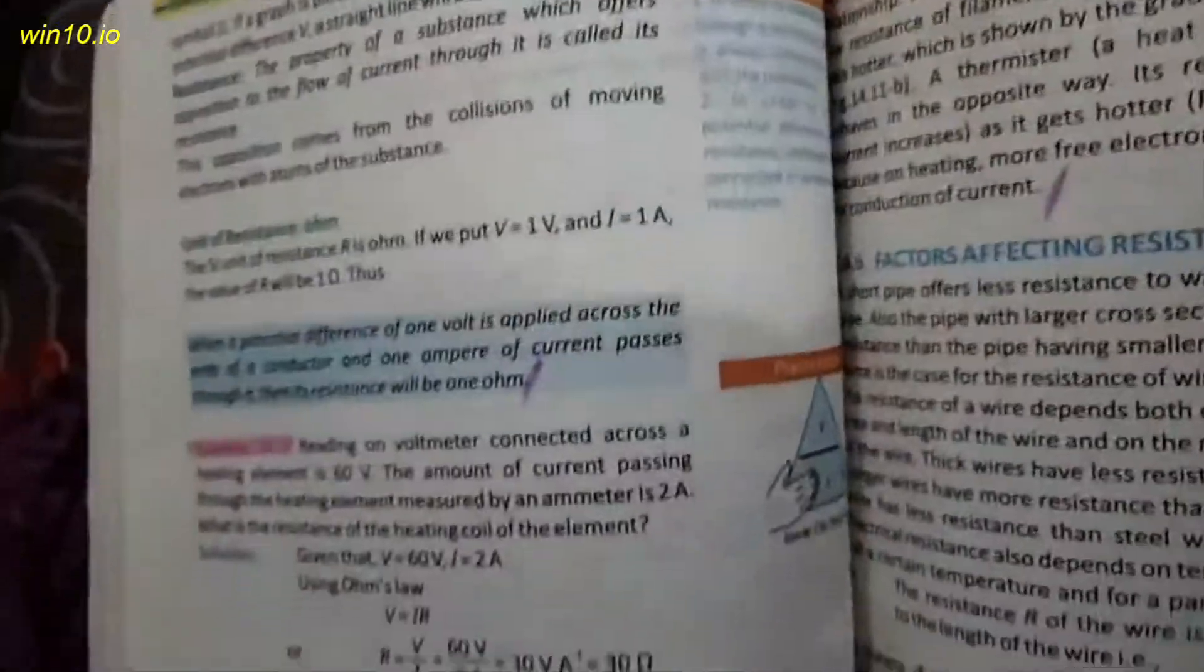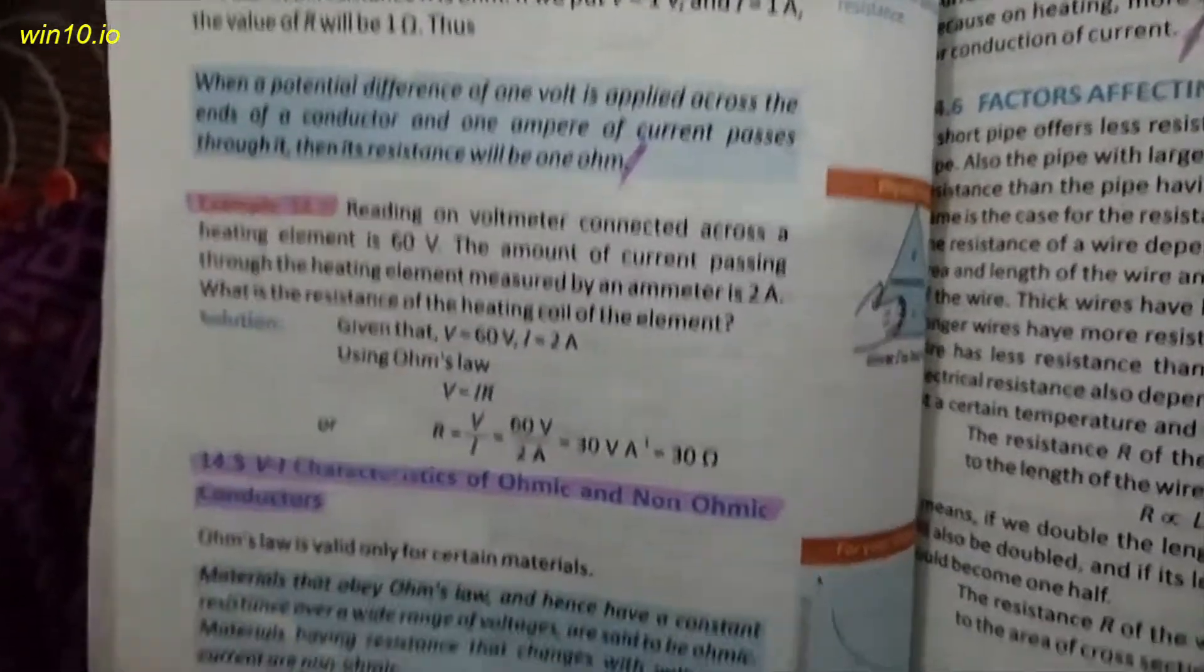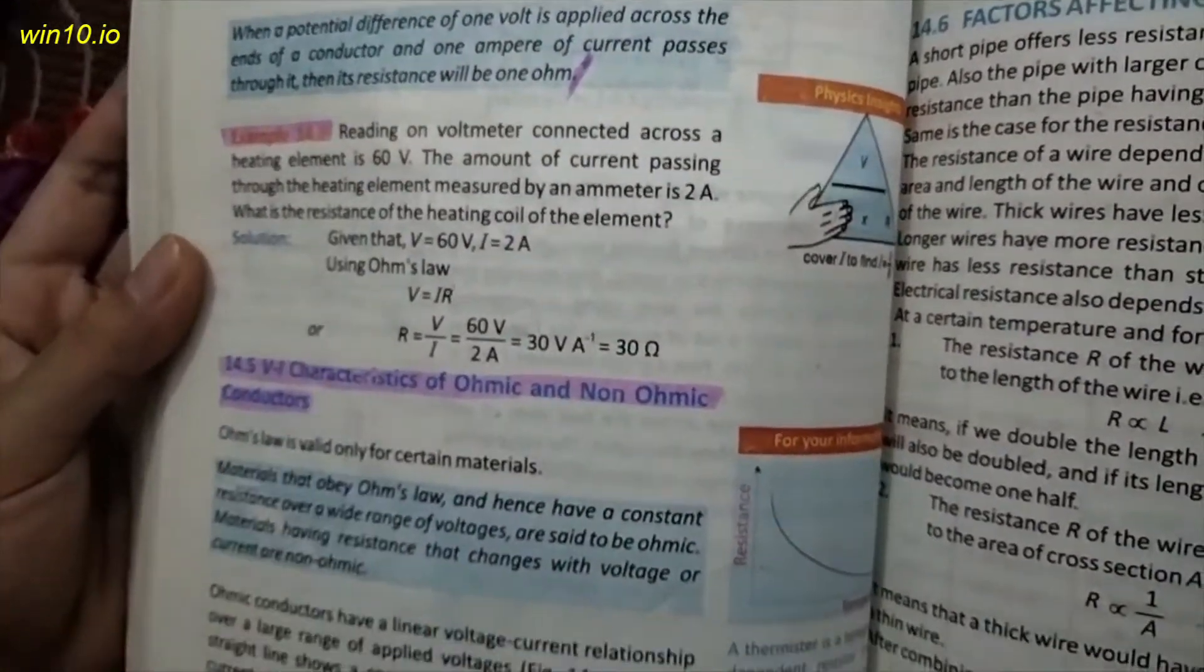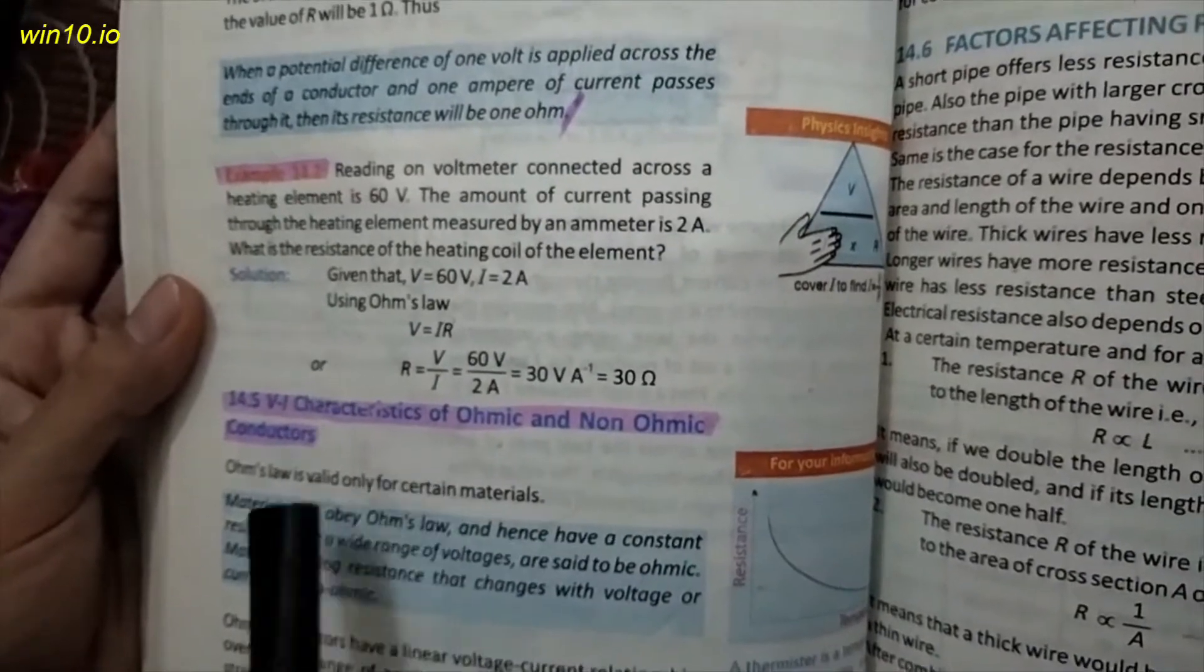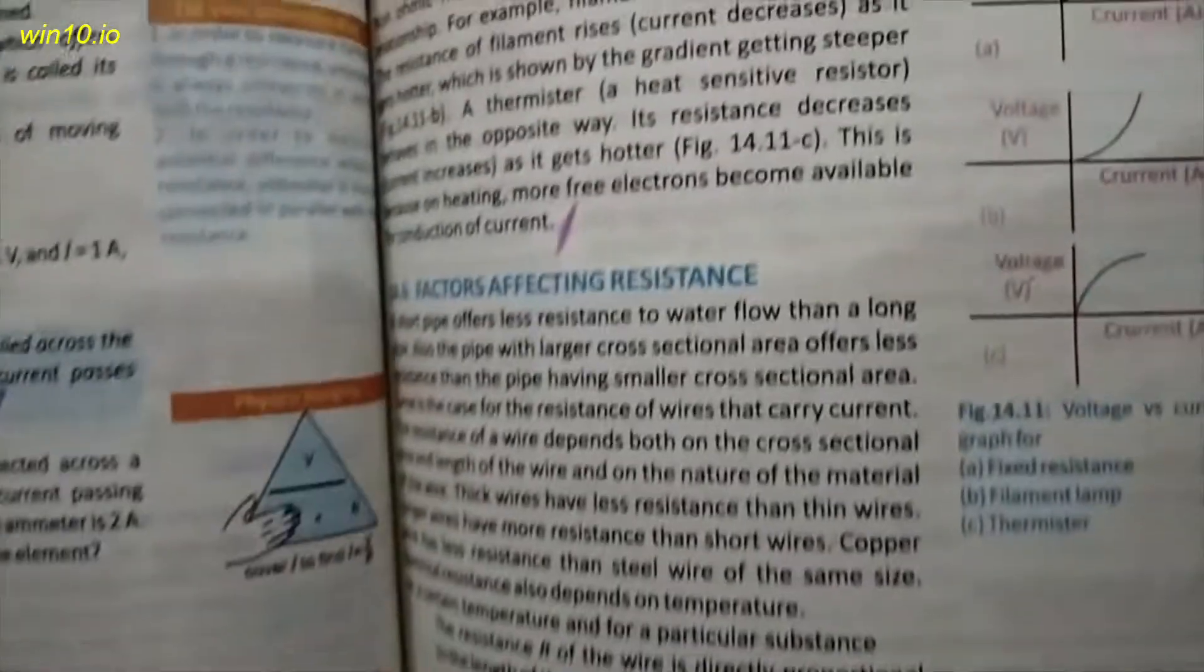Page number 98, example 14.2. Next, the characteristics of ohmic and non-ohmic conductors. This page number 99, here.